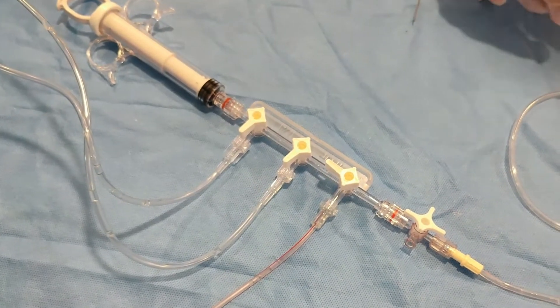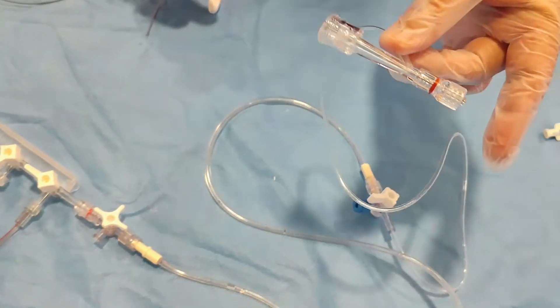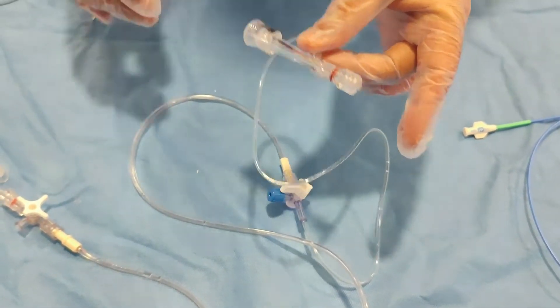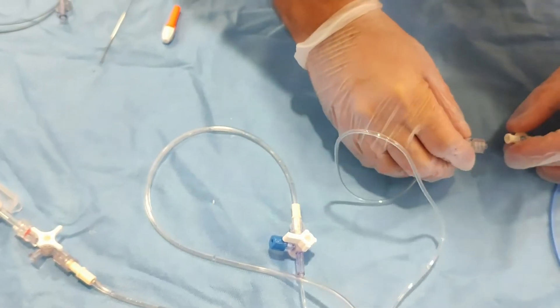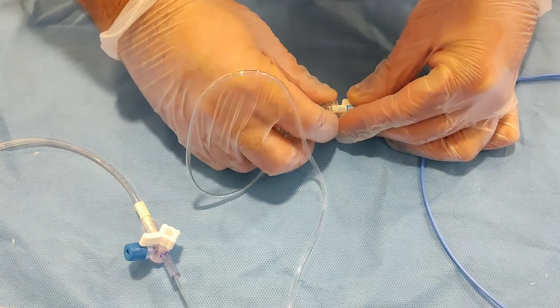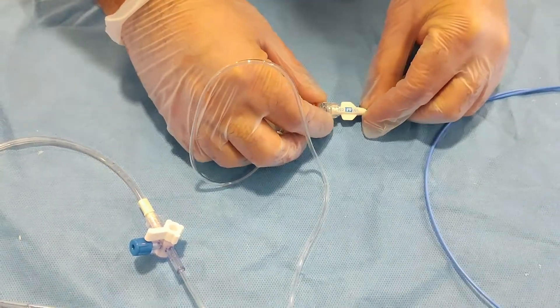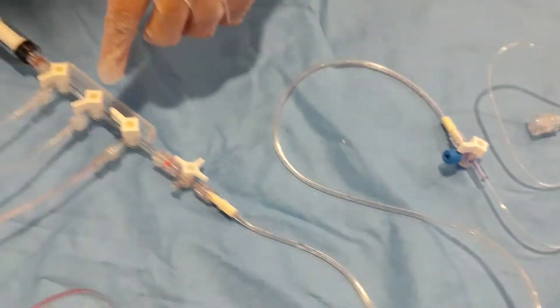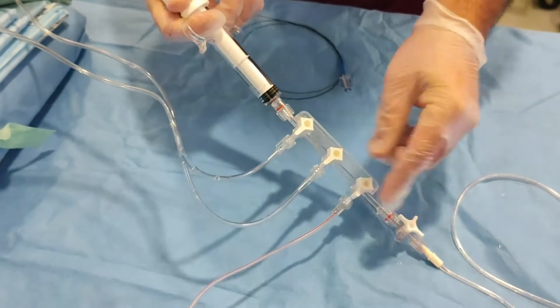So once you close the saline, then make it pressure open. Now this anti-bleed or this y-connector is now ready. So once it's ready, you can make it a fluid-to-fluid phenomena, attach it to the catheter which is already inside the patient.